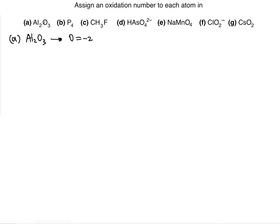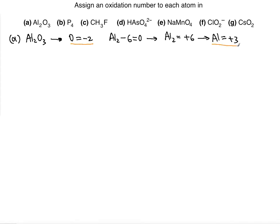We know this is a neutral charge compound, not an ion. So we set up: aluminum×2 plus 3 times negative 2 equals 0, because there are three oxygen atoms, giving minus 6. So aluminum×2 equals plus 6, which means each aluminum atom is 6 divided by 2, which is simply plus 3. The answer is: oxygen is negative 2 and aluminum is plus 3.